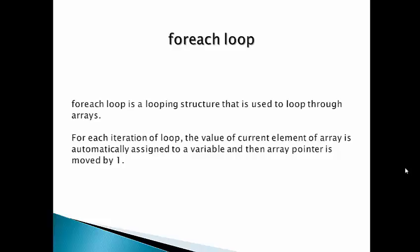The forEach loop is a looping structure used to loop through arrays. In every iteration of the loop, the current element of the array is automatically assigned to a variable, and then the array pointer moves by 1. Every iteration assigns the current array element to a variable, and the array moves to the next element.